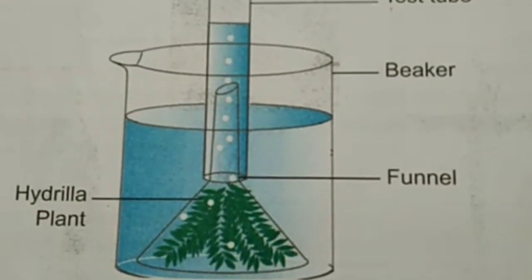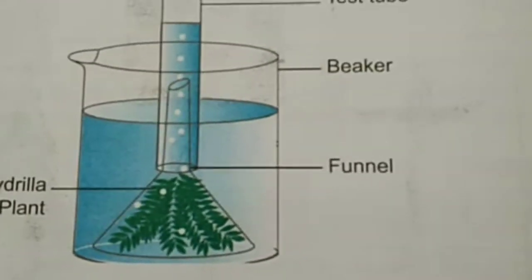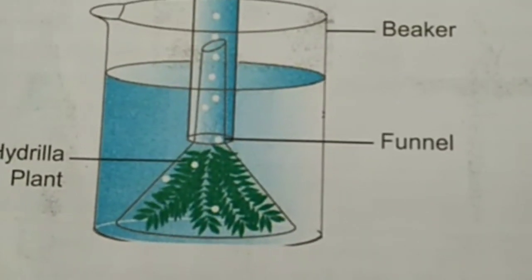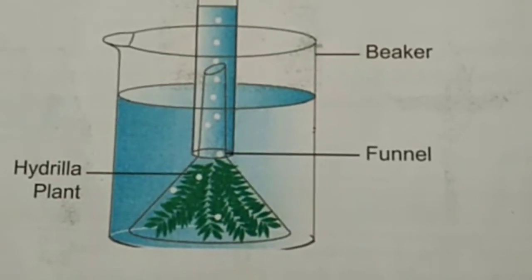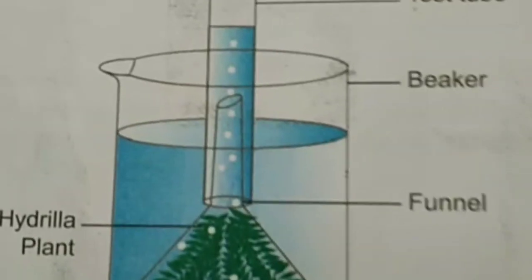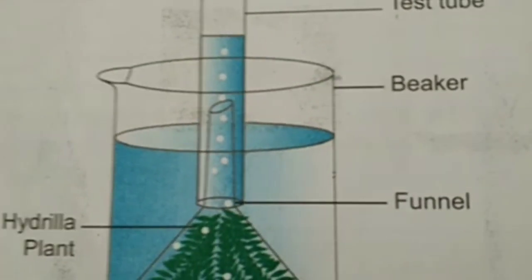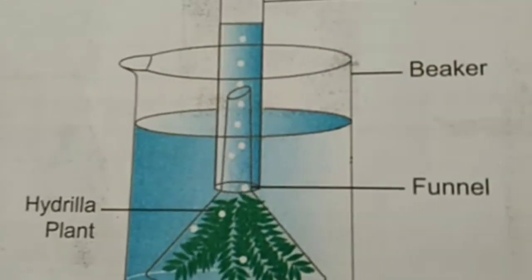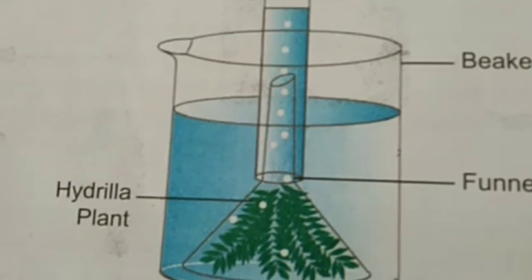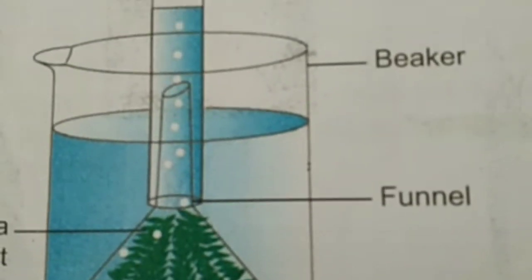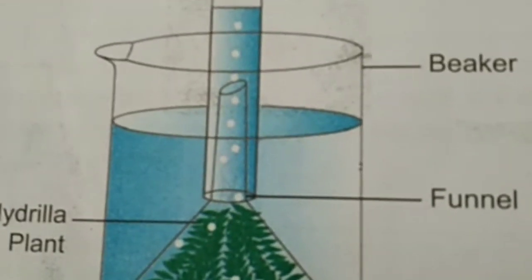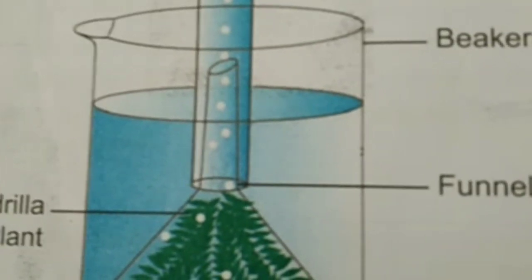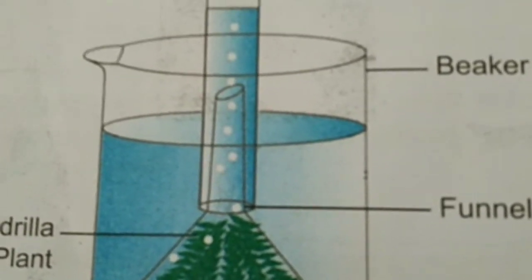It displays when you bring a burning stick near the mouth of the test tube. There is increased flammable appearance because of the oxygen evolved. You can easily find out the oxygen. This process is called the photosynthesis test tube funnel experiment. It's one type of demonstration.